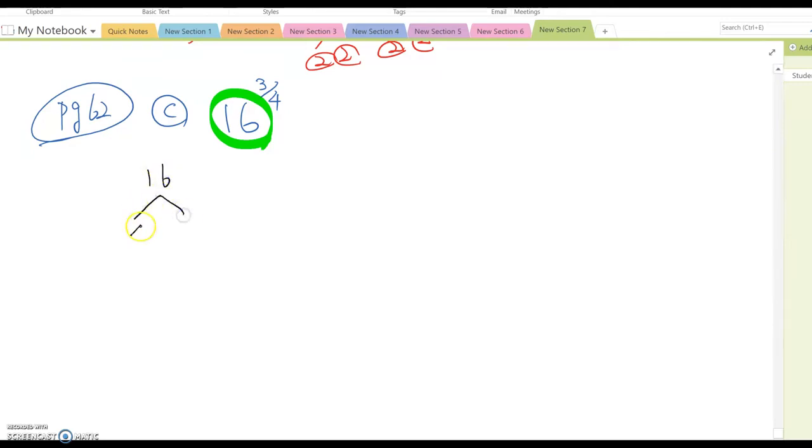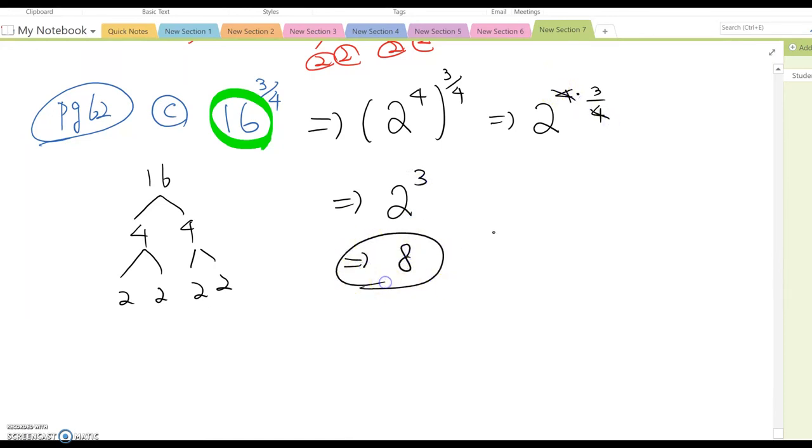So this is going to be 2 to the 4th power to the 3 over 4 power, so 2 to the 4 times 3 over 4 power, which is 2 to the cube power because they cancel out. So it becomes 8, that should be 8, that should be the answer.